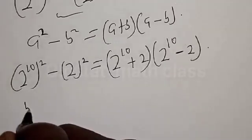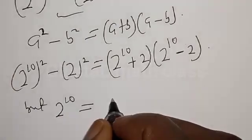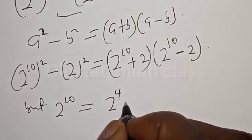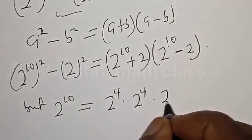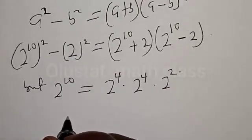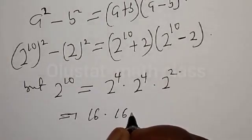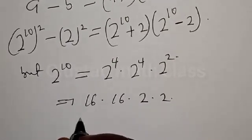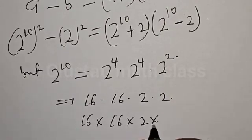Now, 2 raised to power 10 can be expressed as 2 raised to power 4, multiplied by 2 raised to power 4, multiplied by 2 squared. Then 2 raised to power 4 is 16, which equals 16 multiplied by 16 multiplied by 2 multiplied by 2. That is 16 times 16 times 2 times 2.